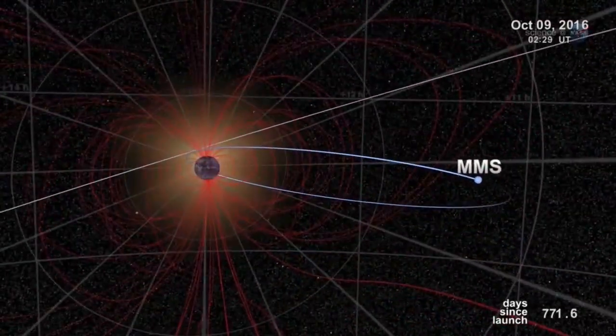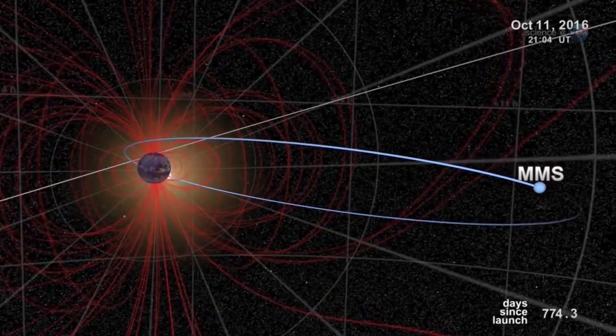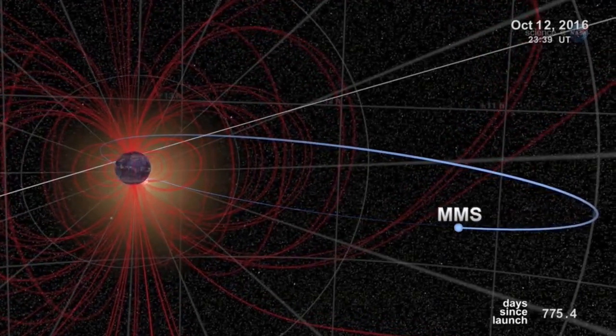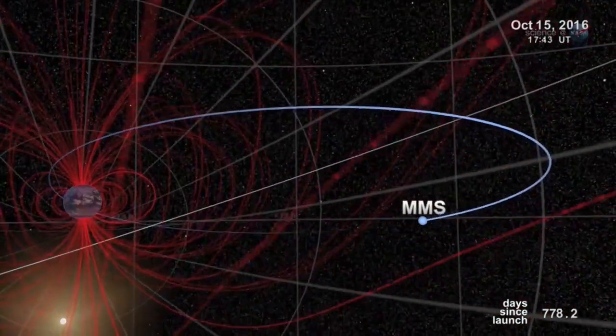Just one problem. Finding them. Magnetic portals are invisible, unstable, and elusive. They open and close without warning. And there are no signposts to guide us in, notes Scudder.